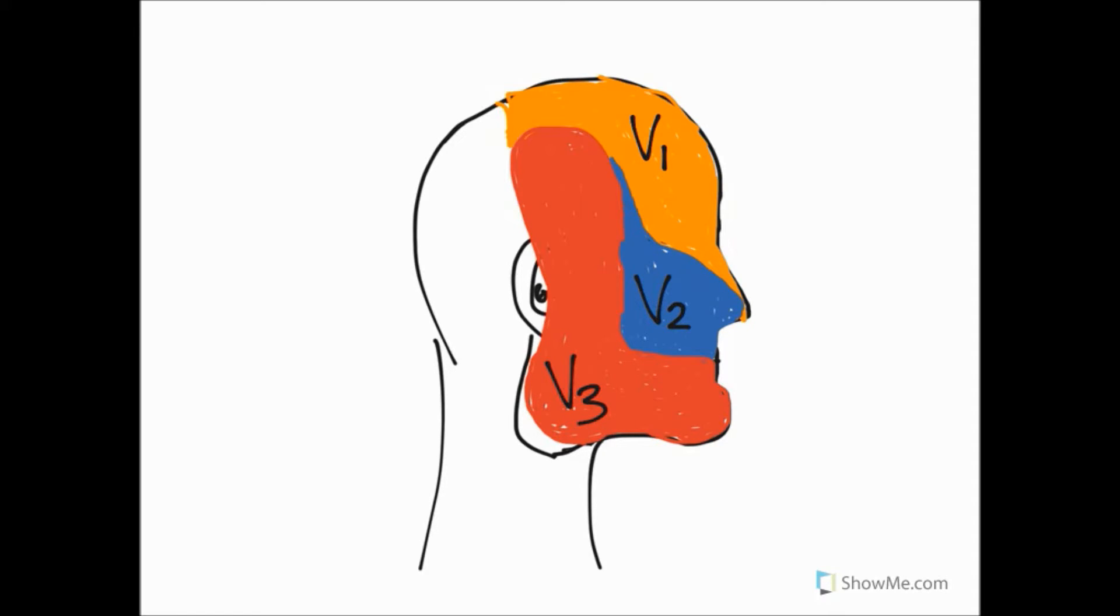So if you were to see a drawing like this without the V1, V2, and V3 on, hopefully you'd be able to know that V1 is the orange bit, V2 is the blue, and V3 is the red.